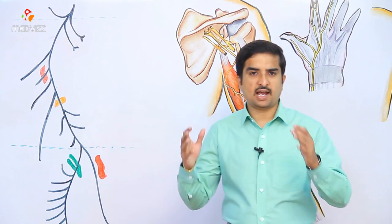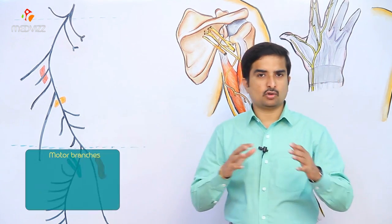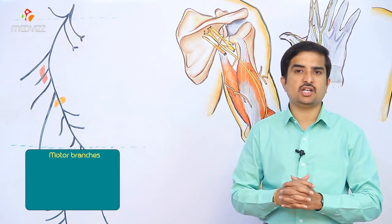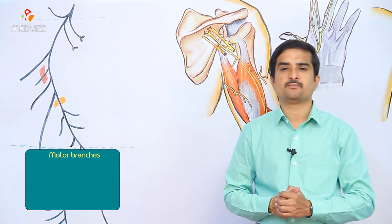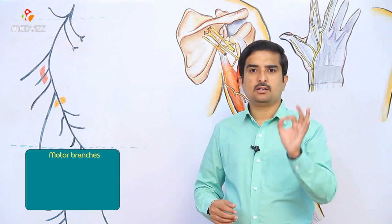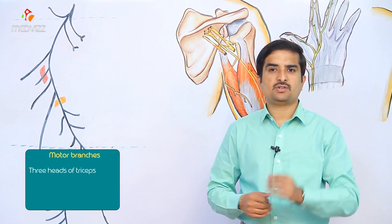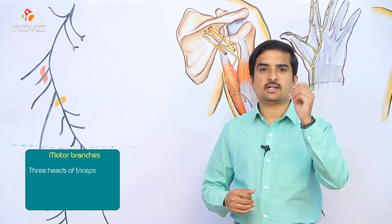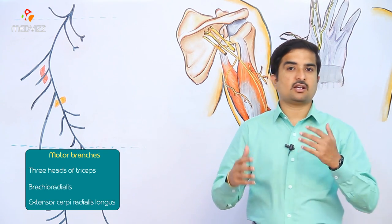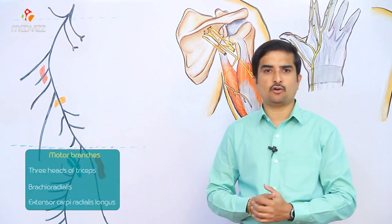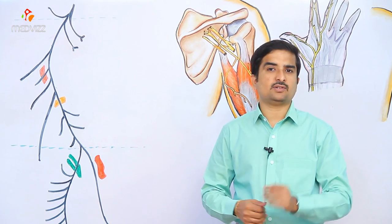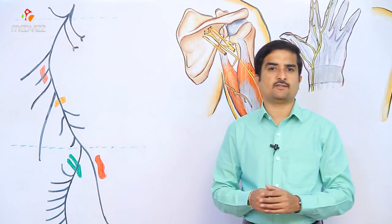The radial nerve innervates muscles mainly located in the posterior upper arm and posterior forearm, called the extensor compartment of the upper limb. In the upper arm it mainly innervates the three heads of the triceps brachii, which acts to extend the arm at the elbow. It also gives rise to branches supplying the brachioradialis and extensor carpi radialis longus. The deep terminal branch innervates the remaining muscles of the posterior forearm.